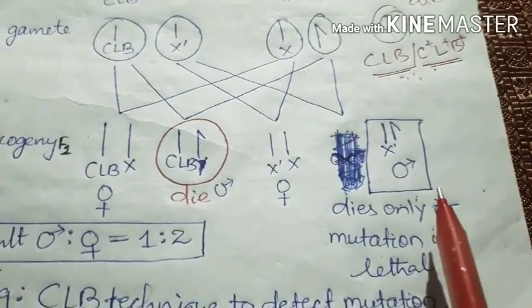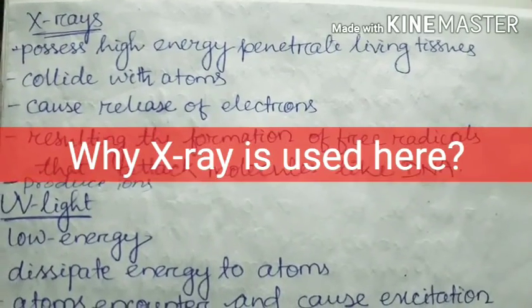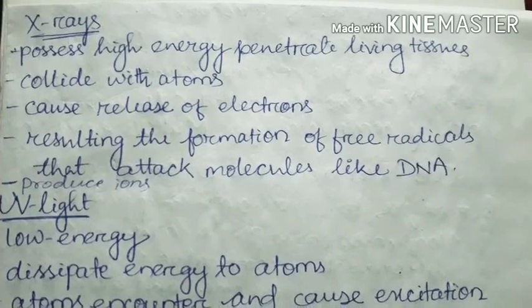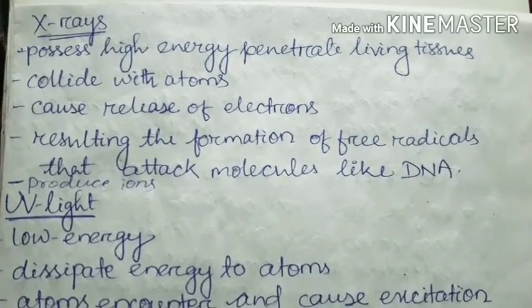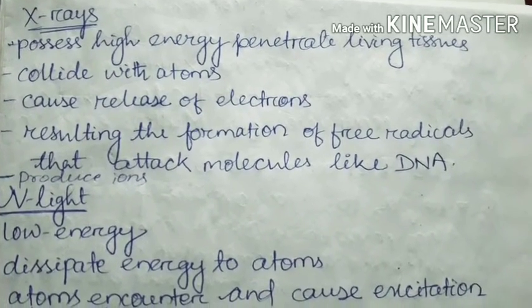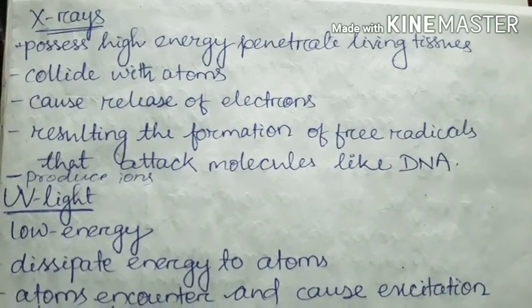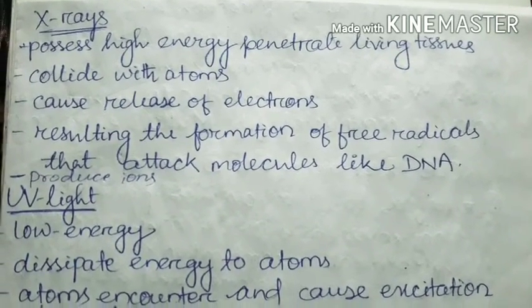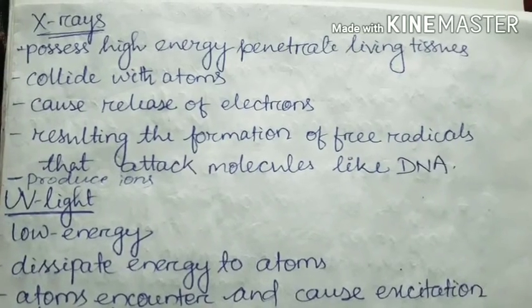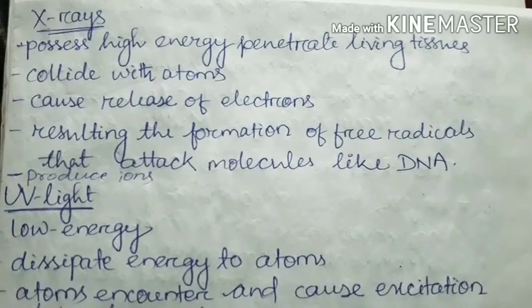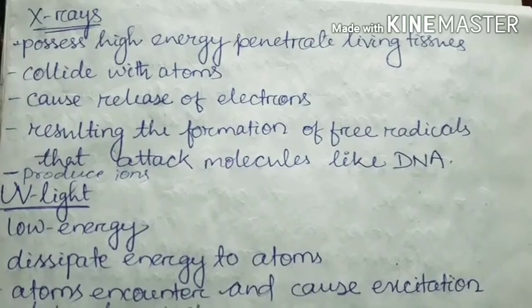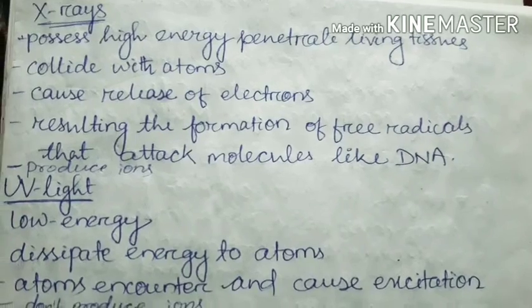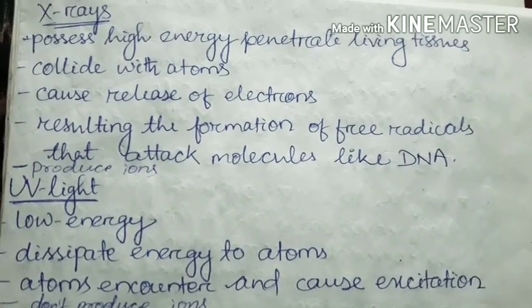Now the question is why Muller took only X-rays. Radiations are two types: ionizing and non-ionizing. Ionizing radiations are X-rays and gamma rays. Non-ionizing radiations are UV light. Why did he take only X-ray and not UV light? Because X-ray is the only ray that produces ions.